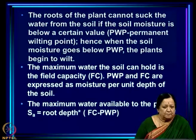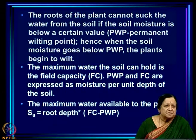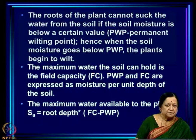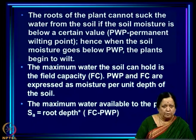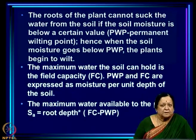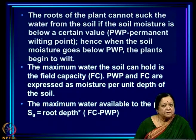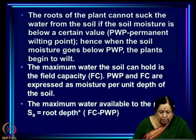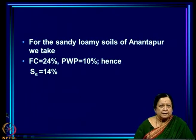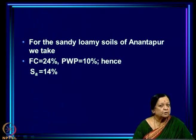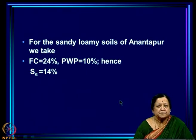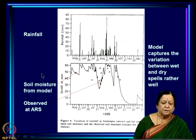The maximum water the soil can hold is the field capacity (FC), which varies from soil to soil. For red sandy soils, field capacity is less than for clay or black soils. PWP and FC are expressed as moisture per unit depth. The maximum water available to the plant is root depth multiplied by (FC minus PWP). For the sandy loamy soils of Anandpur, FC is 24% and wilting point is 10%, so maximum available soil moisture is 14%.